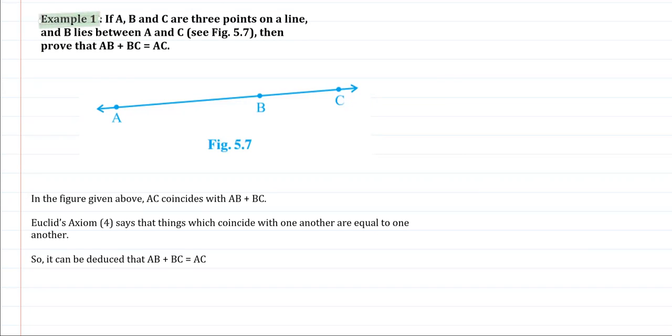This is example one taken from a textbook based on Euclid's geometry. It says A, B, C are three points on a line. Three points which lie on a line are called collinear, so they are collinear points.